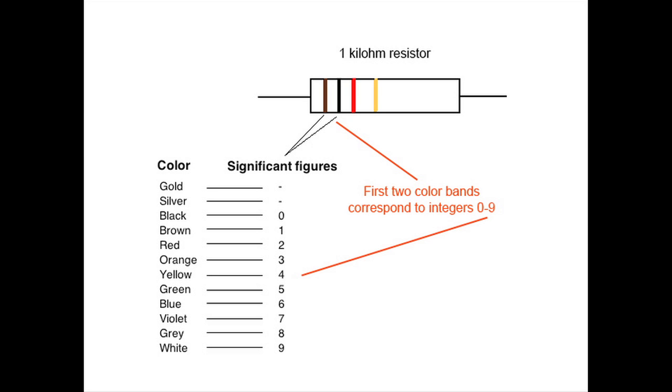This is the color-coding system. A different color is assigned to each integer value 0 through 9. The first two bands represent a single two-digit number. In this case, brown and black, 10.